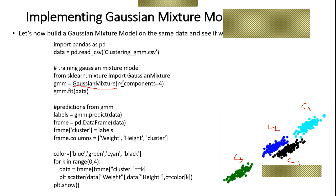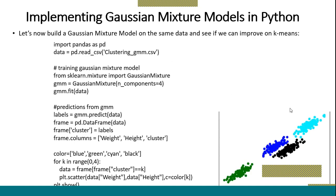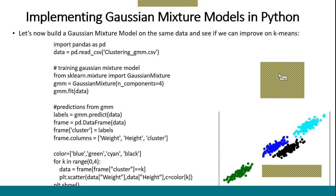Here we are using four to indicate the number of clusters, and using the GMM predict function, we are getting the prediction. This prediction says your dataset is belonging to C1 as the cyan color, blue color is C2, green color is C3, and black color is C4. This is about the Gaussian Mixture Model. I hope you understand today's lecture — what the Gaussian Mixture Model means and how to implement it.